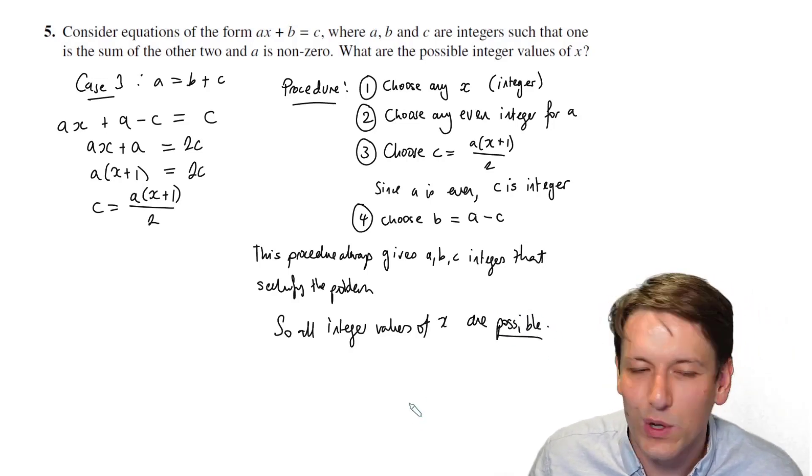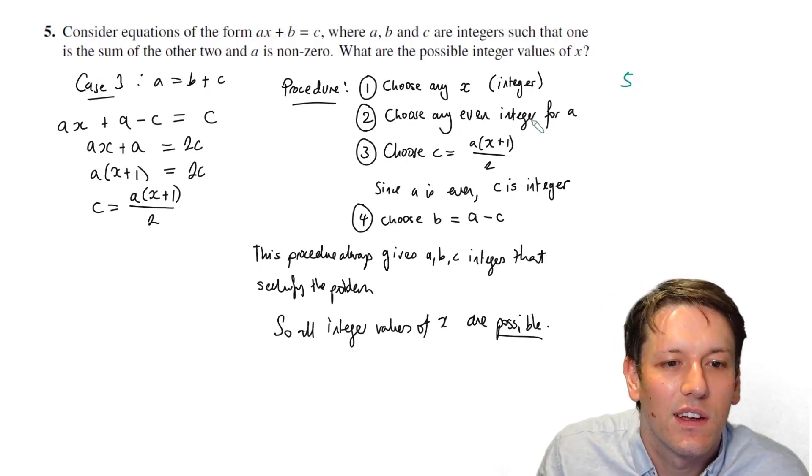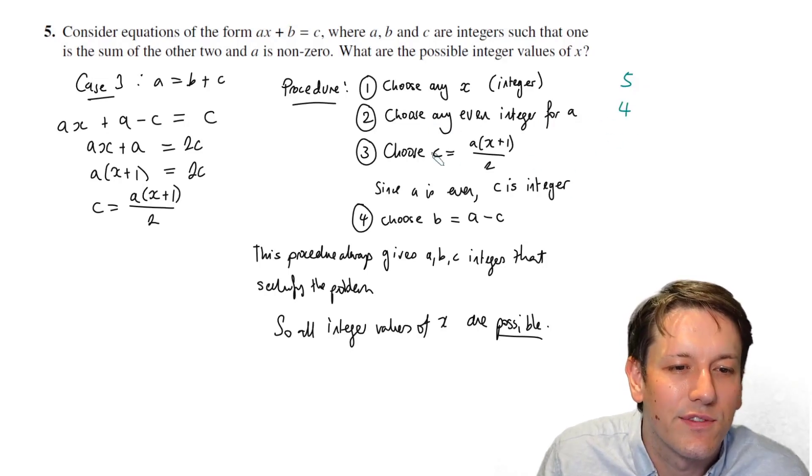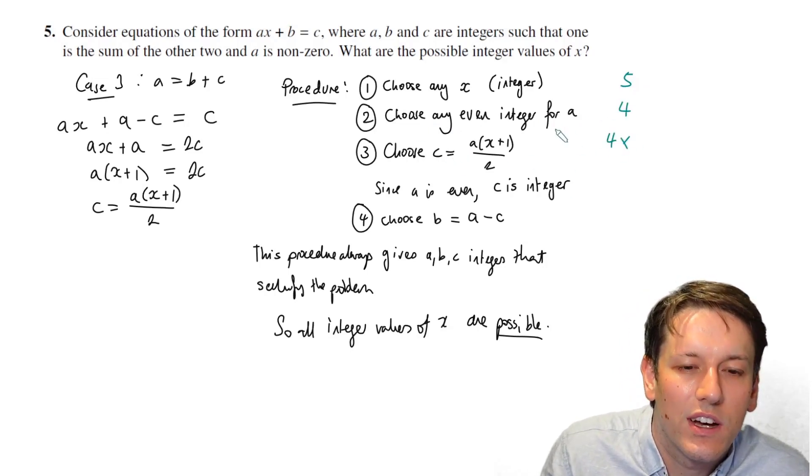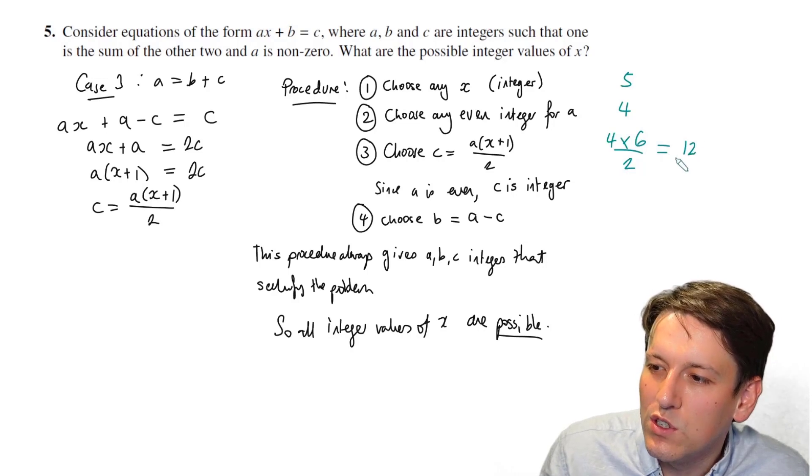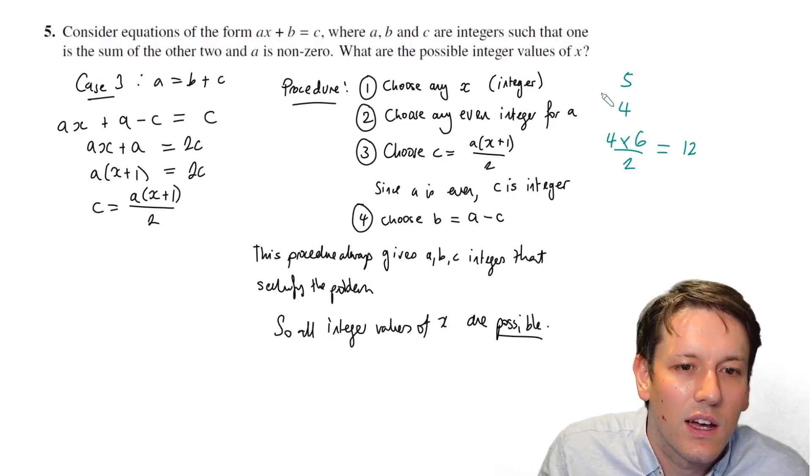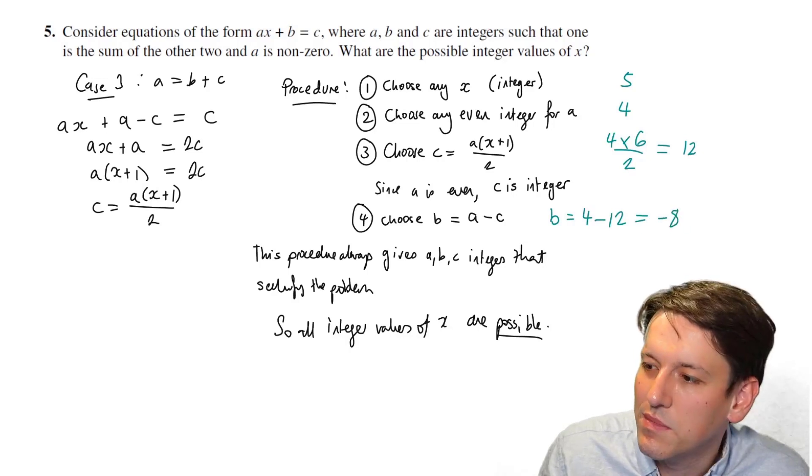If you're at all confused by this, just follow it through with a few numbers. Let's just pick any value of x, let's say 5, take an even integer for a, so let's take 4. If I choose c to be 4 times (x plus 1), so 4 times 6 over 2, that's going to give me 24 over 2, which is 12. And then I'm going to take b is a minus c, so b is going to be 4 minus 12, which is minus 8. Nothing says they have to be positive.